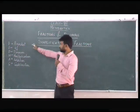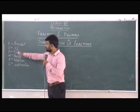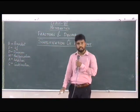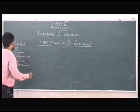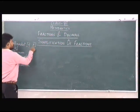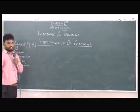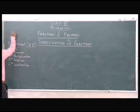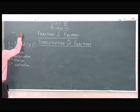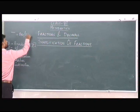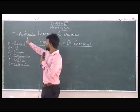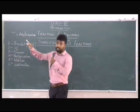BODMAS stands for: B - bracket of, O - stands for off, D - stands for division, M - stands for multiplication, A - stands for addition, and S - stands for subtraction. In brackets, we have three types: square bracket, curly bracket, and circular bracket. We also have another type called bar bracket or vinculum, spelled V-I-N-C-U-L-U-M.